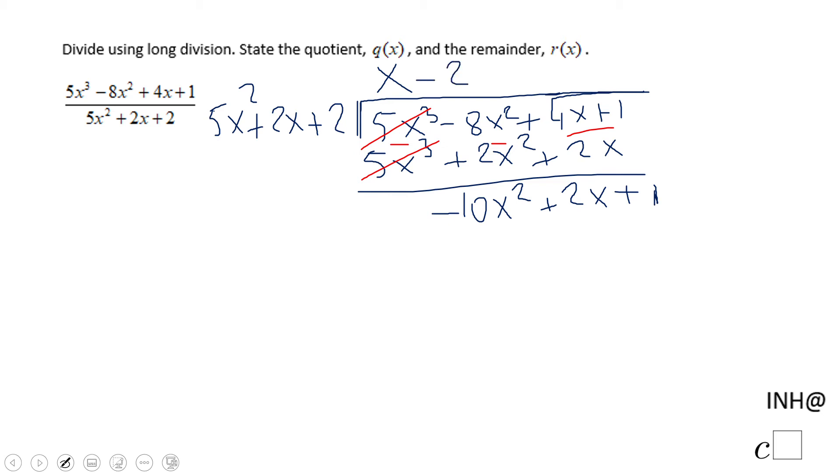Negative 2 times 5x squared is negative 10x squared. Negative 2 times 2x is negative 4x. And negative 2 times positive 2 is negative 4.